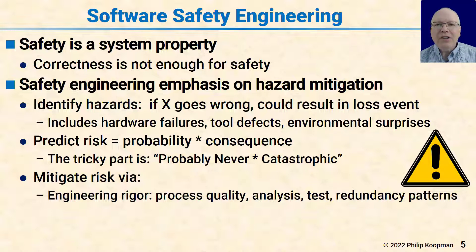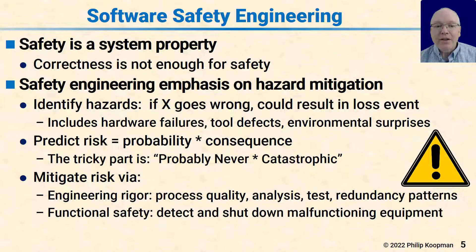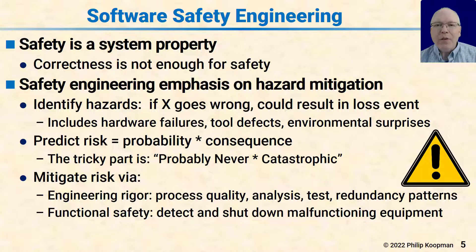The mitigation typically involves engineering rigor such as process quality, doing some analysis on the system, some testing, some redundancy patterns, and so on. It also involves the use of functional safety. Functional safety acknowledges that there may be an internal defect in your system, so you take approaches to mitigate those defects that are eventually going to happen. For example, if you have a malfunctioning component, you detect that it's malfunctioning and shut it down to get yourself to a safe state, potentially with some sort of backup system taking over if necessary.